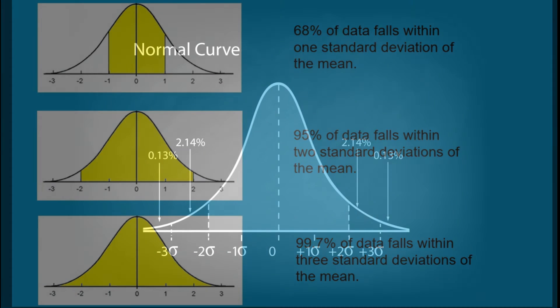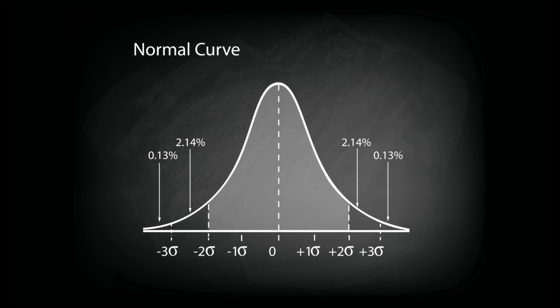The normal distribution is symmetrical. That means if you put a mirror in the center this half is exactly the same as this half. In other words 50% of my data will be to the right of the mean and 50% will be to the left.